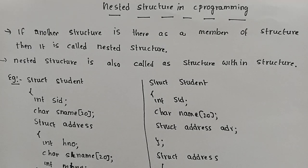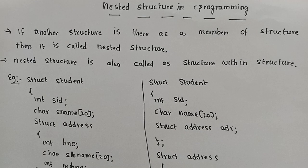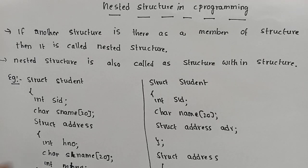So, we are going to discuss nested structure. The structure is a user-defined data type, which is used to store the elements of different data types under a single name. Different data types elements will represent a single entity as a single name.